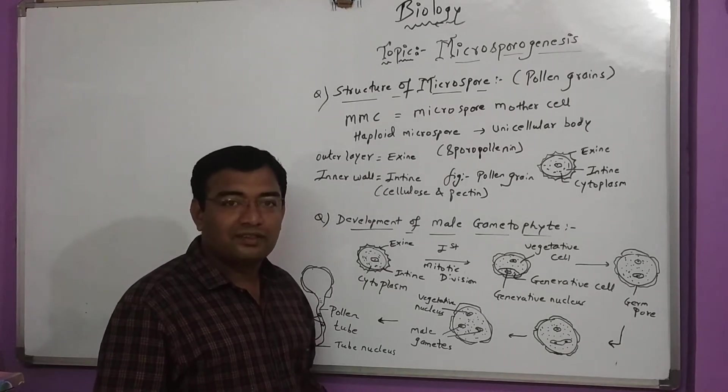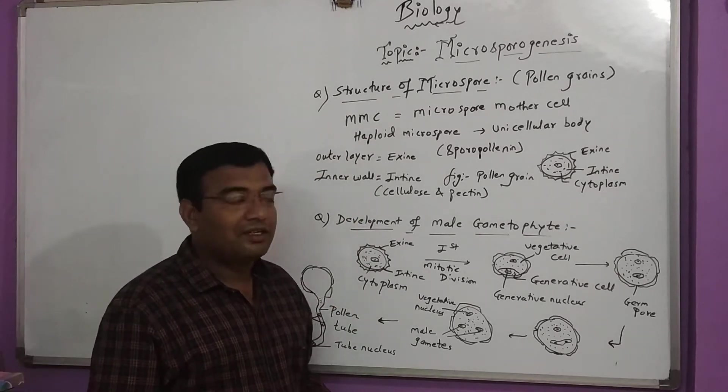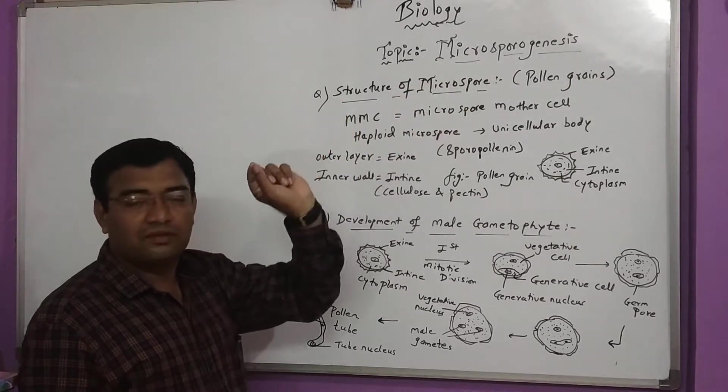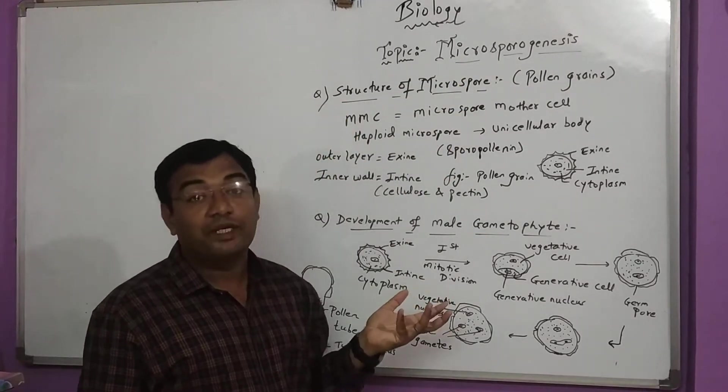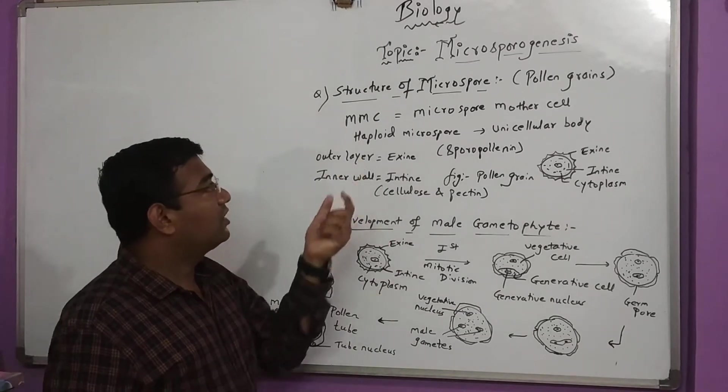Hello friends. Today's topic is Microsporogenesis. Micro means very small. Sporogenesis is the development of spores. Genesis means to develop into a spore form.